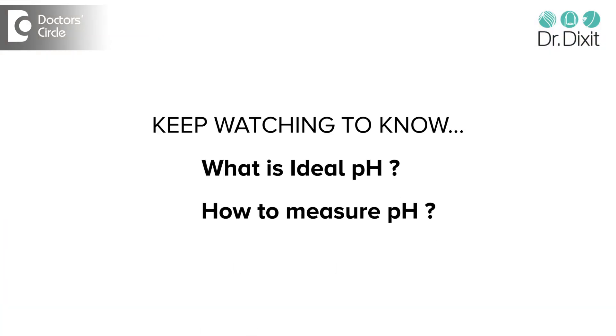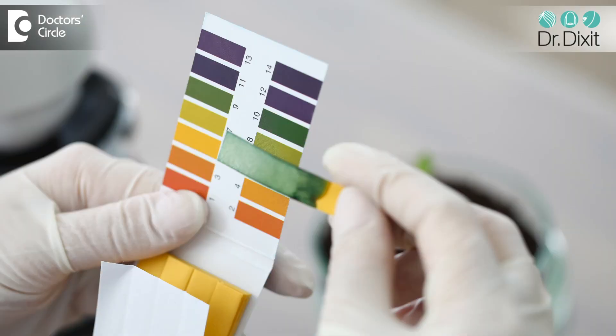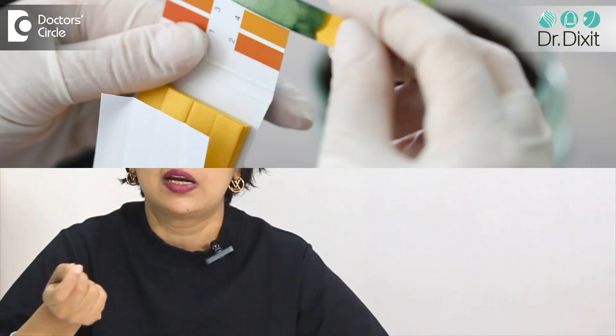So what is the ideal pH and how do we measure the pH? We have pH testing litmus papers which are available, which you can test by applying on the skin. They are not very easily available. However, if you are able to go to a dermatologist who has this test available, you can ask them to get it done.